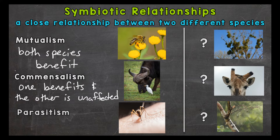The cattle egrets follow the grazing animals around as they graze. The grazing animal — let's say a cow — stirs up insects that hide in the grass. This makes finding and eating insects much easier for the cattle egrets. The cattle egrets benefit from this and the grazing animal is unaffected. I do want to mention that there are instances of cattle egrets directly removing ticks and other parasites from cattle. Cattle egrets may sit on the back of a grazing animal and benefit them by taking care of those ticks and parasites.